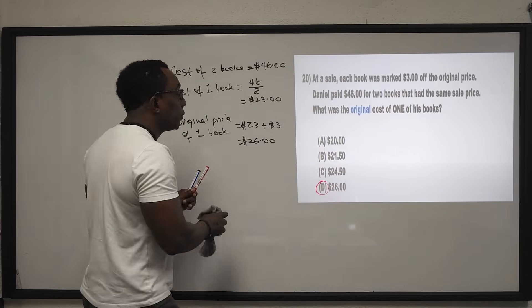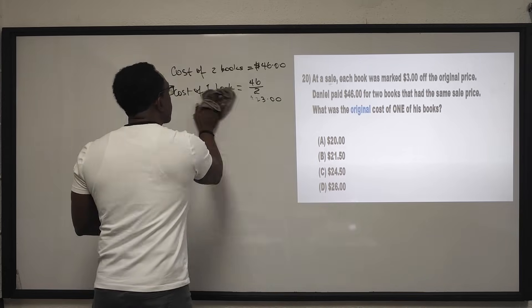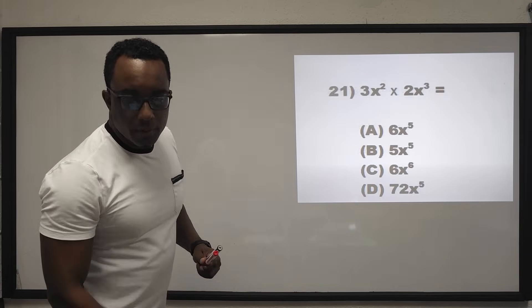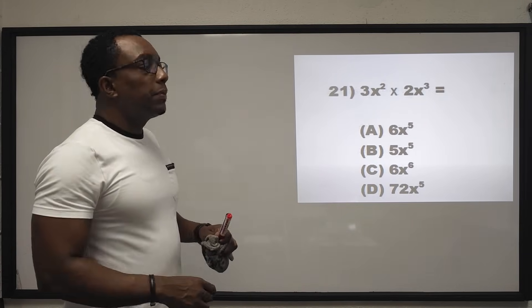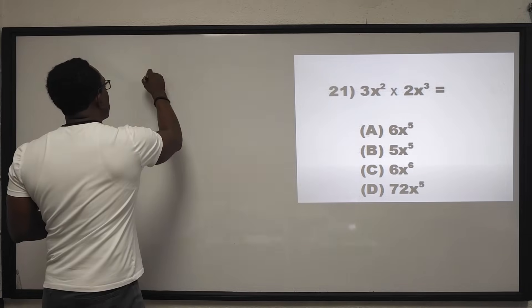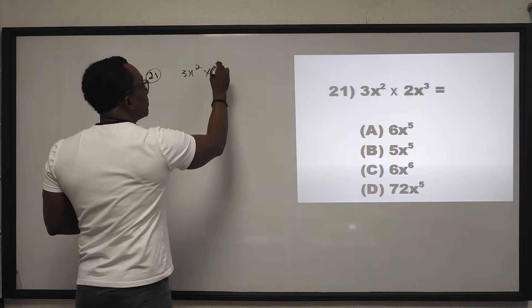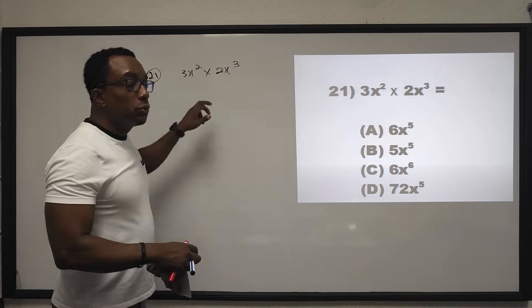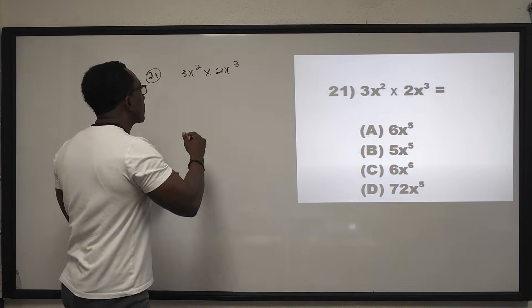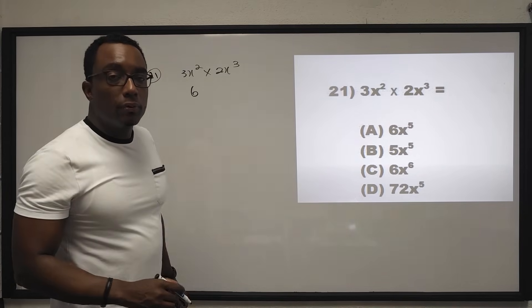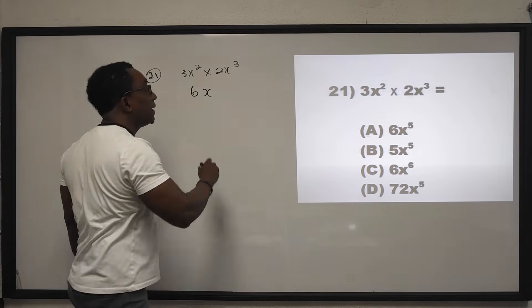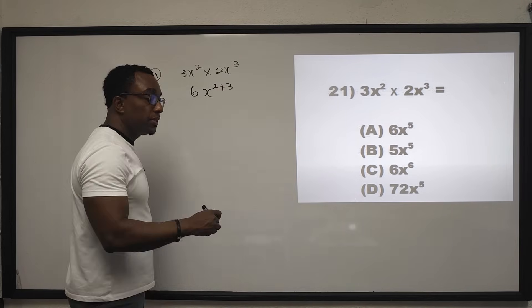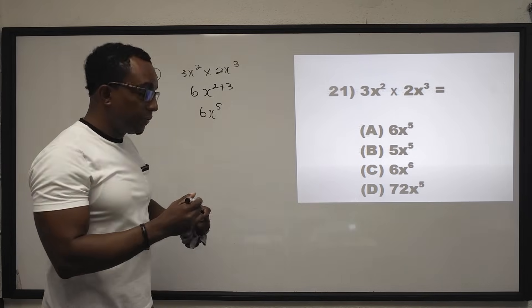Question 21: 3x squared multiplied by 2x to the power of 3. Multiply the coefficients: 3 times 2 equals 6. For the variable: x squared times x cubed — same base, add the powers — gives x to the power of 5. The answer is 6x to the power of 5. The answer is E.